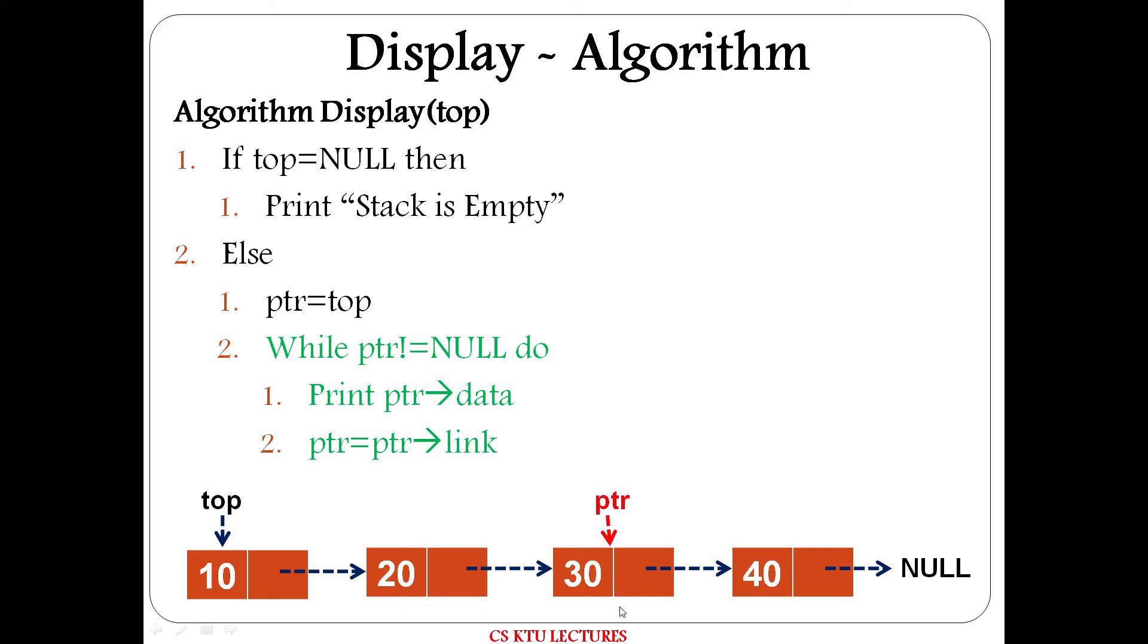Next node ptr updates. Again ptr is not equal to null. So 30 displays. Again ptr is not equal to null. 40 displays, ptr updates. Now ptr is null. So while loop exits. This is the stack. This is the complete data. This is the display algorithm.